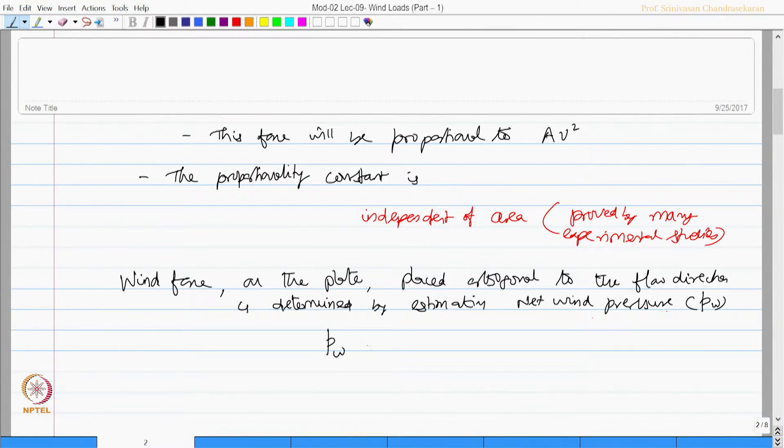p_w equals half rho_a C_w v square, equation 1, where rho_a is mass density of air taken as 1.25 kg per cubic meter, and C_w is wind pressure coefficient.